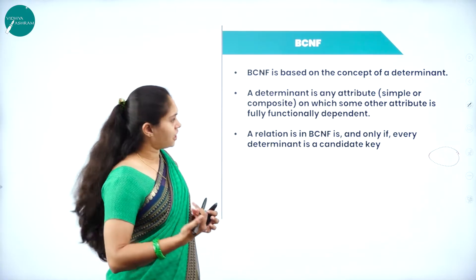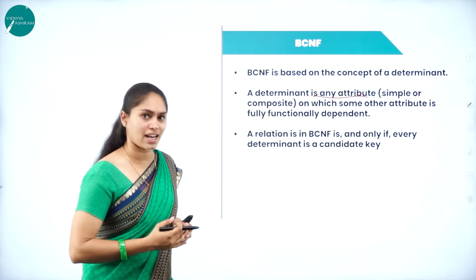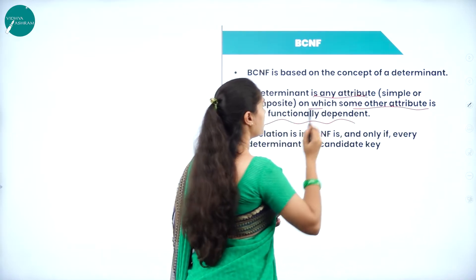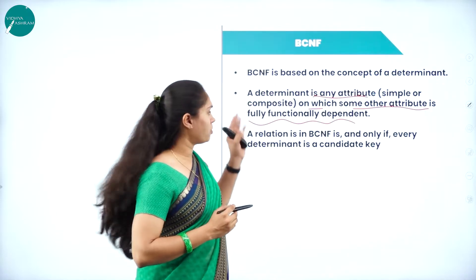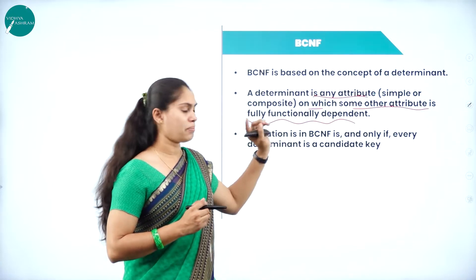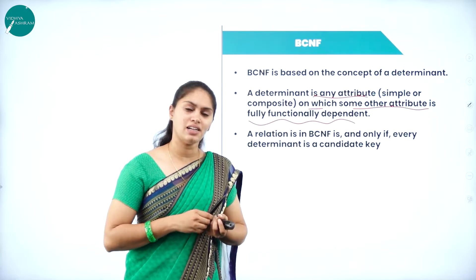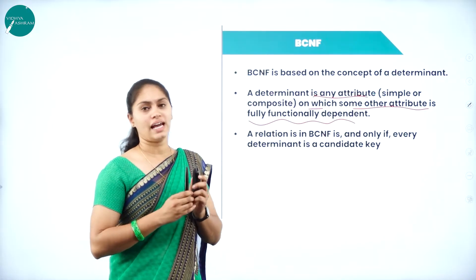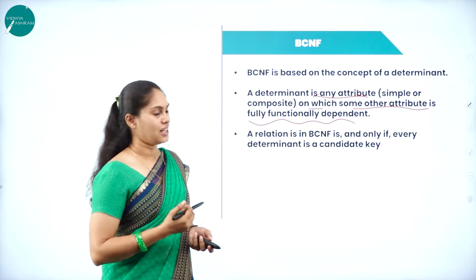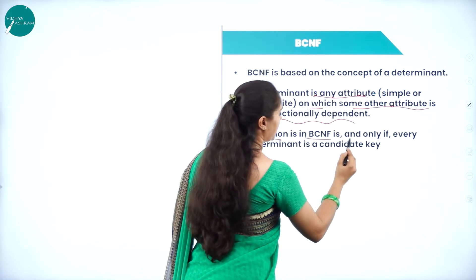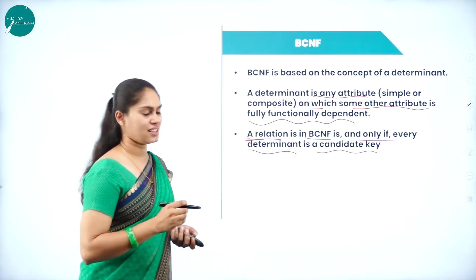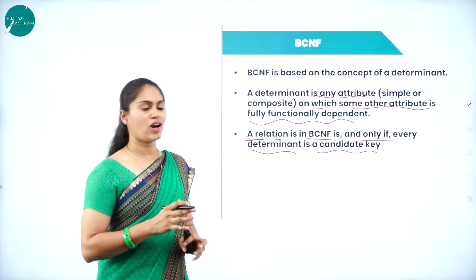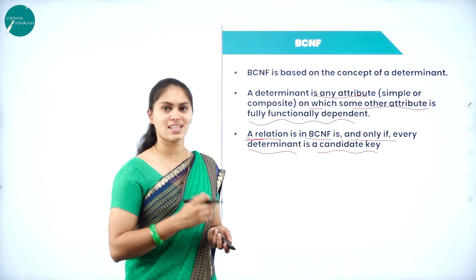What is a determinant? Determinants are any attribute — simple or composite — on which some other attribute is fully functionally dependent. That attribute on which another attribute is fully functionally dependent is called a determinant. BCNF is based on the determinant concept. A relation is in BCNF if and only if every determinant is a candidate key. Only then can we say a table is in Boyce-Codd Normal Form.